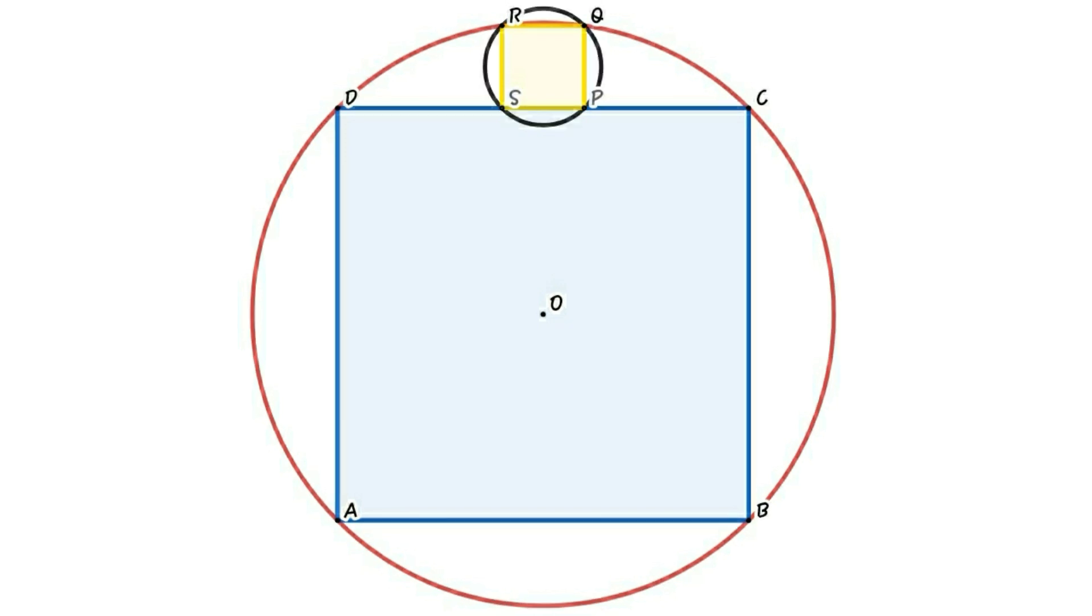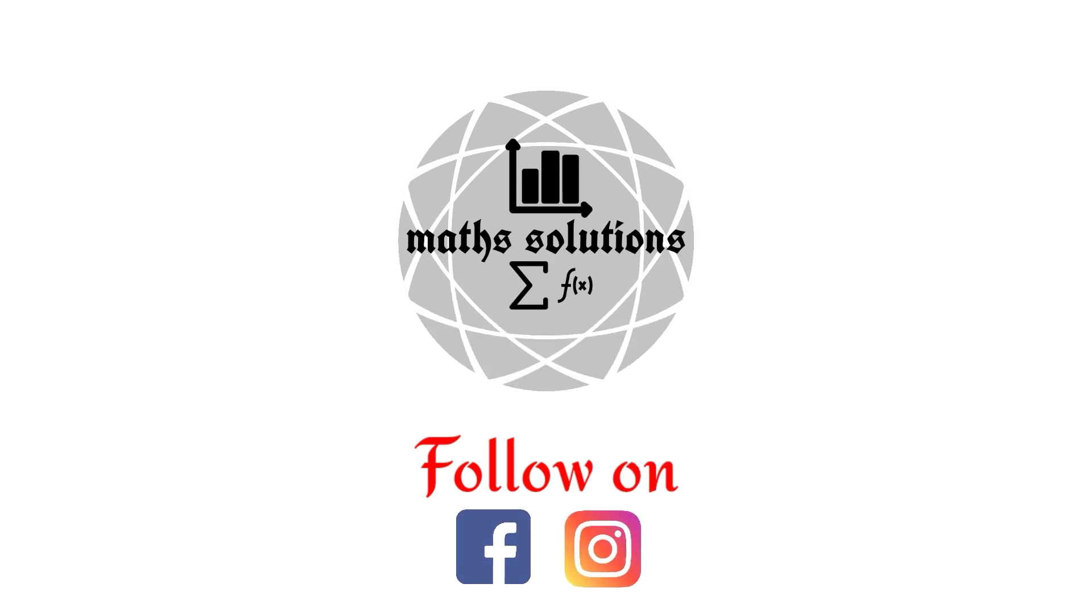Draw another circle passing through PQRS. Then find the relation between radius of bigger circle and radius of smaller circle. Pause the video and try to solve this problem.